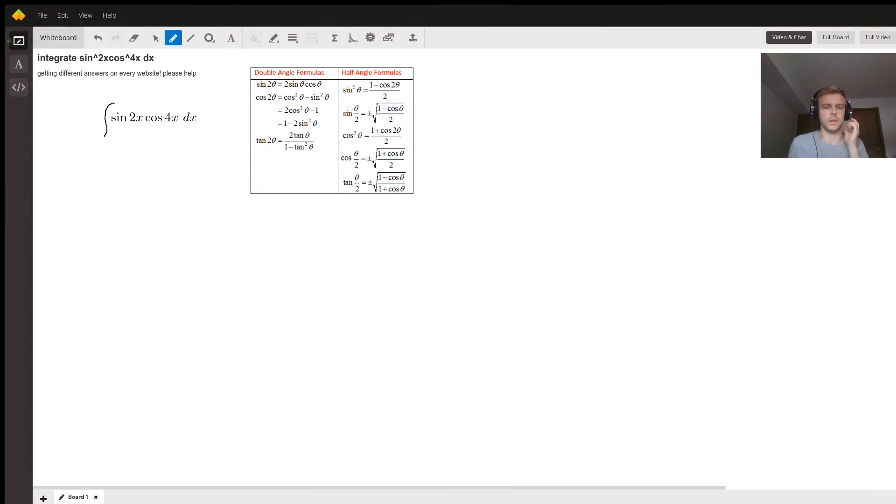So here we have the integral of sin(2x)cos(4x), and I notice you mentioned you're getting different answers on every website. There are quite a few ways to do this one. The way I'm going to do it is to first change cosine into a different expression so that they have the same angle, but there's a lot of different ways you can start.